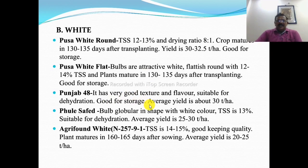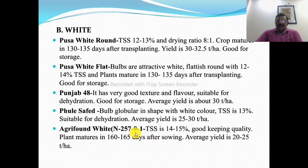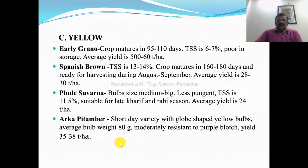Punjab 48 has very good texture and flavor, is suitable for dehydration, good for storage, and productivity is about 30 tons per hectare. Phule Safed and Agrifound White have TSS of about 14 to 15 percent, good keeping quality, plant maturity of 160 to 165 days after sowing, and average yield of 20 to 25 tons per hectare. All these are Rabi crop varieties.